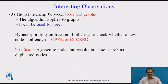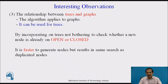An interesting observation is the relationship between trees and graphs. The algorithm applies to graphs, but it can also be used for trees because every tree is a restricted graph. When applied to trees, we skip checking whether a new node is already on open or closed. It is faster to generate nodes, but the result is the same — the search continues to produce duplicate nodes.